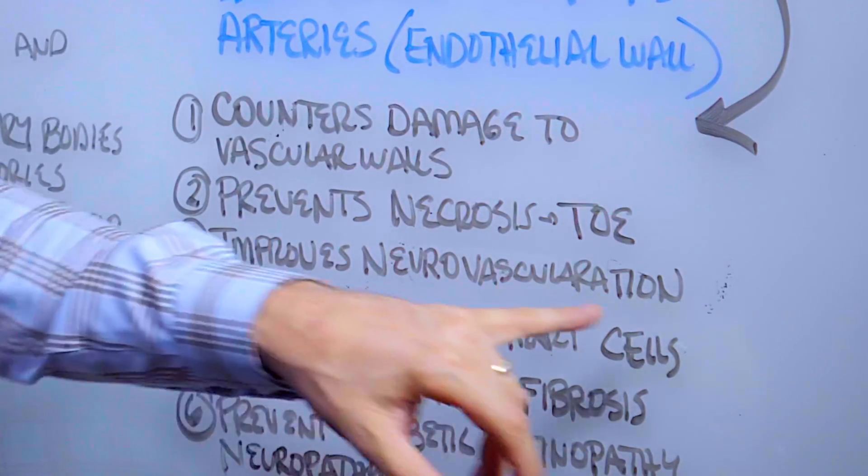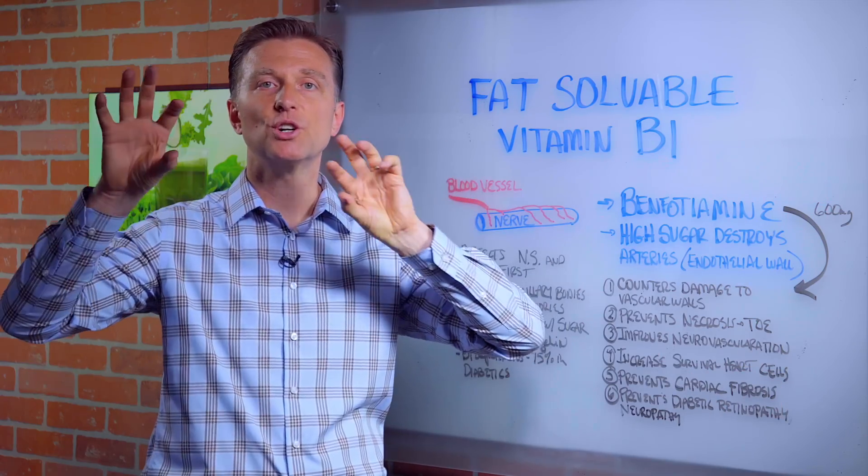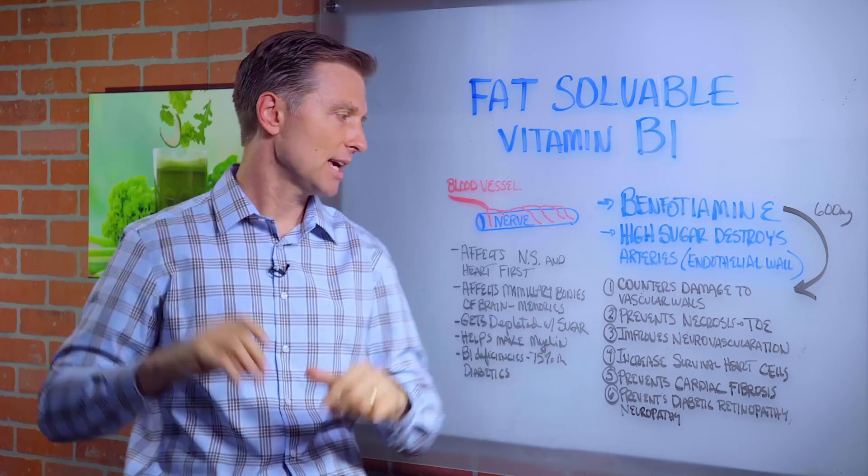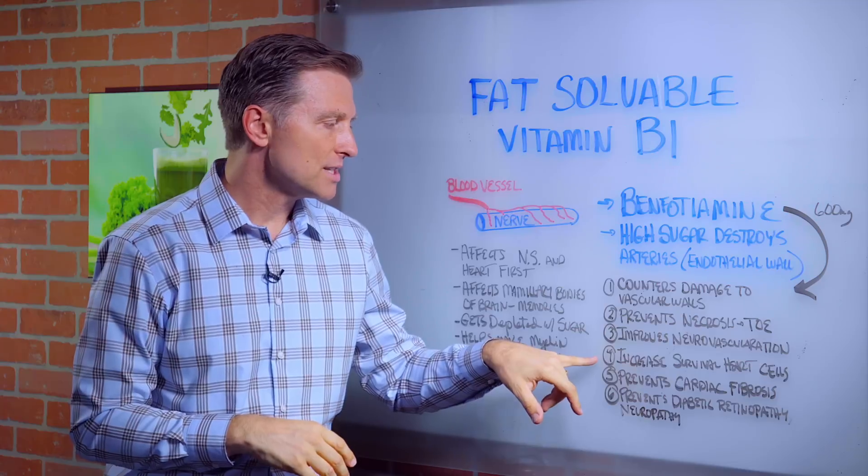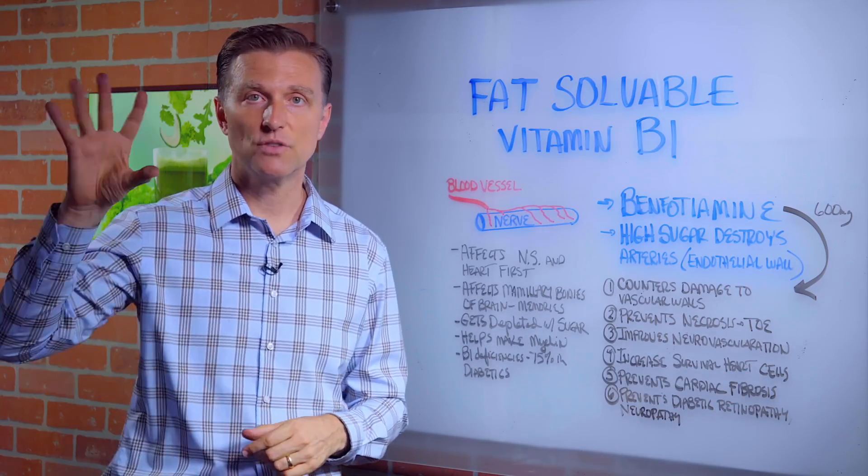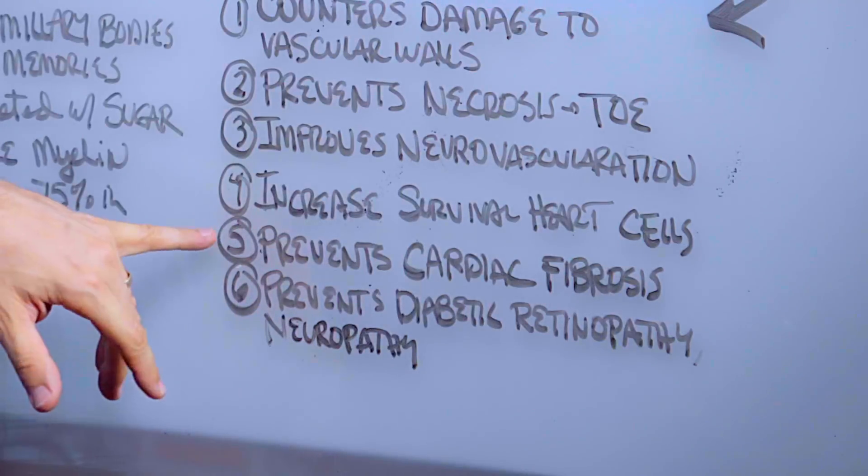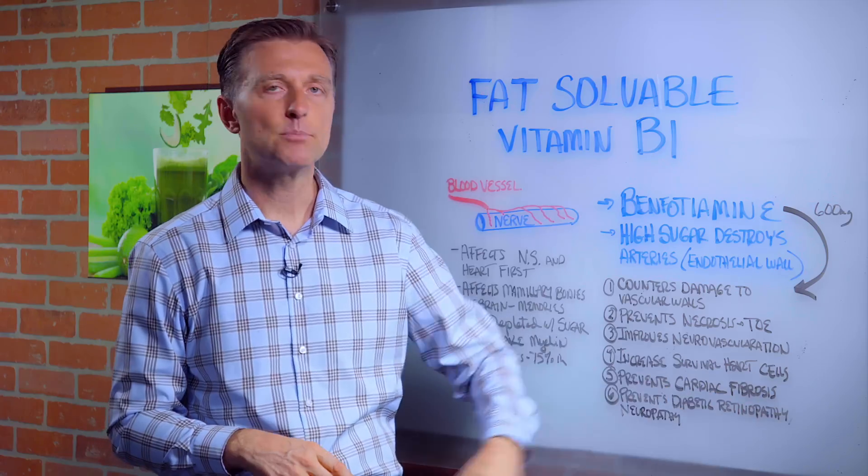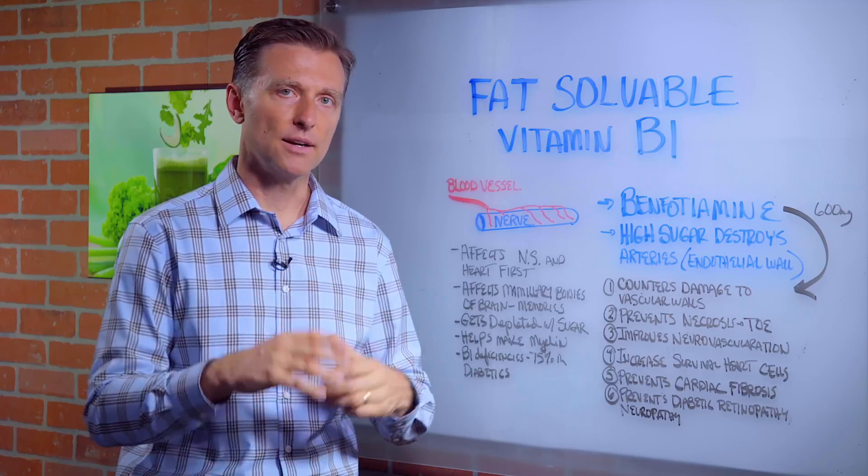Number three, B1 improves the neurovascular system. That's the connection between the nerves and the vascular system together. B1 increases the survival of heart cells as well, because it affects the nervous system and the heart. Number five, B1 prevents cardiac fibrosis. That's like scar tissue filling up the heart.